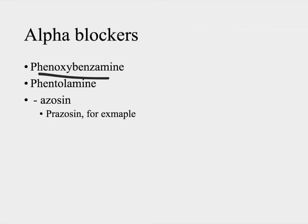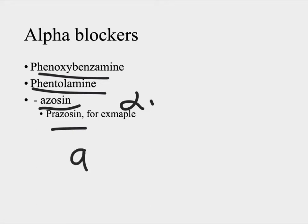That gets us into the alpha blockers. Phenoxybenzamine is an irreversible, non-selective alpha blocker — it will block alpha-1 and alpha-2. It takes about a day for your body to replace an alpha receptor, so if you block it irreversibly, you have completely shut it off for the entire day. The goal of alpha blockade in pheochromocytoma is to get drug levels high enough that every alpha receptor is basically shut down for the duration of surgery. There is another alpha blocker, phentolamine, which can possibly be used in place of phenoxybenzamine. And then there are the selective alpha-1 blockers, which end in '-azosin' — prazosin, for example. The A stands for alpha; alpha-1 selective inhibitor.